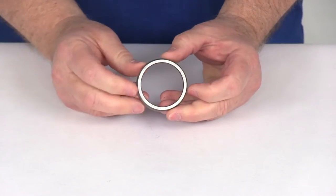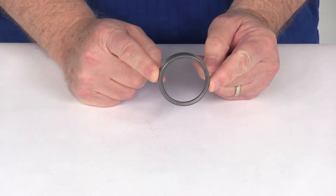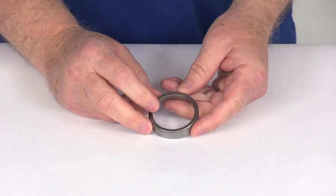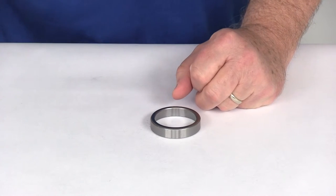Now the main measurement on your bearing race is the outer diameter, which is measured edge to edge just like this. And it's measured in thousands. So what I'm going to do is use a digital caliper just to show you the measurement.